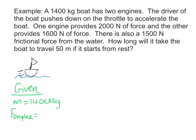So 2000 newtons plus 1600 newtons means we have a total force from the engines of 3600 newtons. We know that the frictional force is 1500 newtons. We know that the boat starts from rest, so the initial velocity is 0 meters per second. And we know that it travels 50 meters. So delta x is 50 meters.